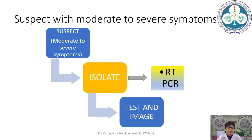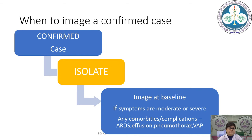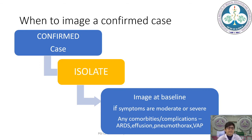In a large-volume patient care center it is not practically possible to separately clean the machine after every patient, and there is a chance of transmission between patients if the machine is not properly cleaned. Remember that the X-ray detector touches the body parts and chin of the patient — these are highly contagious surfaces where fomite transmission is liable to occur if you are not careful. For confirmed cases, we image at baseline only if symptoms are moderate or severe, if the patient has comorbidities, or if a complication such as ARDS, pleural effusion, pneumothorax, or ventilator-acquired pneumonia is suspected. Imaging should be clinical-need-based and only if it will change patient management.